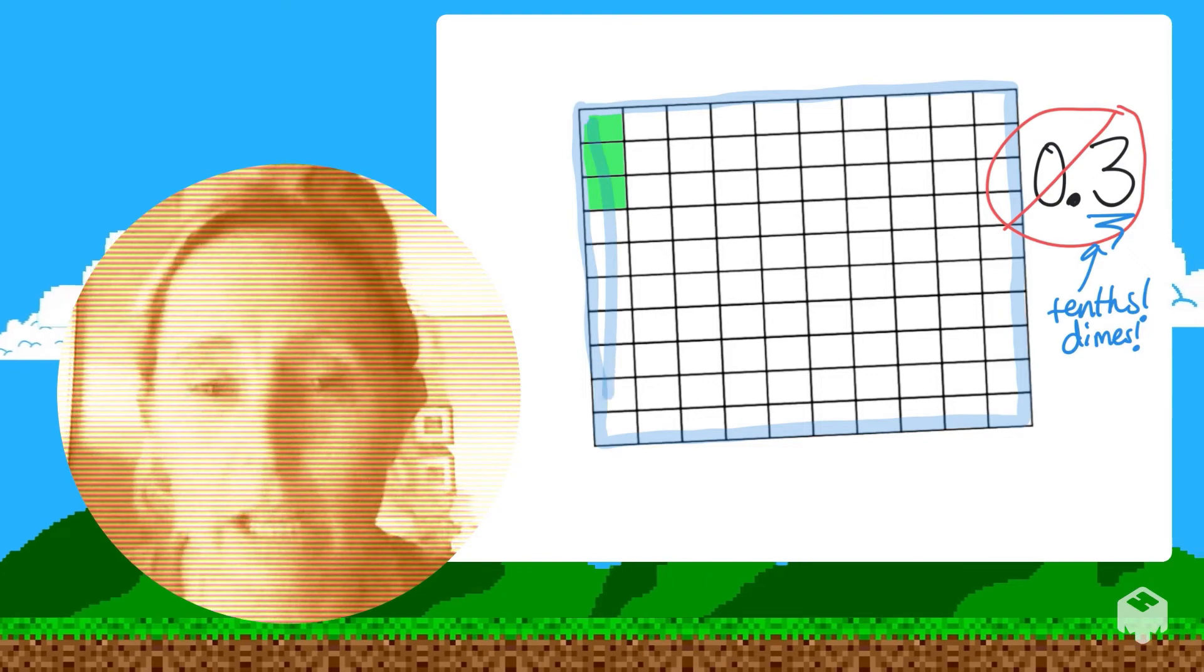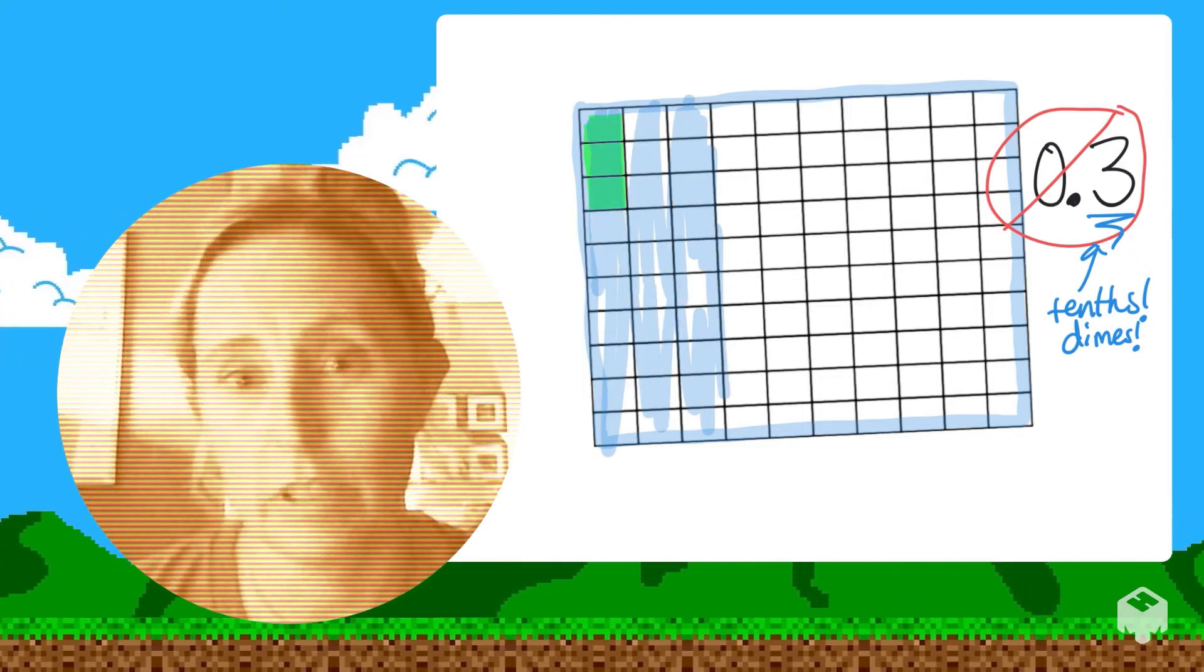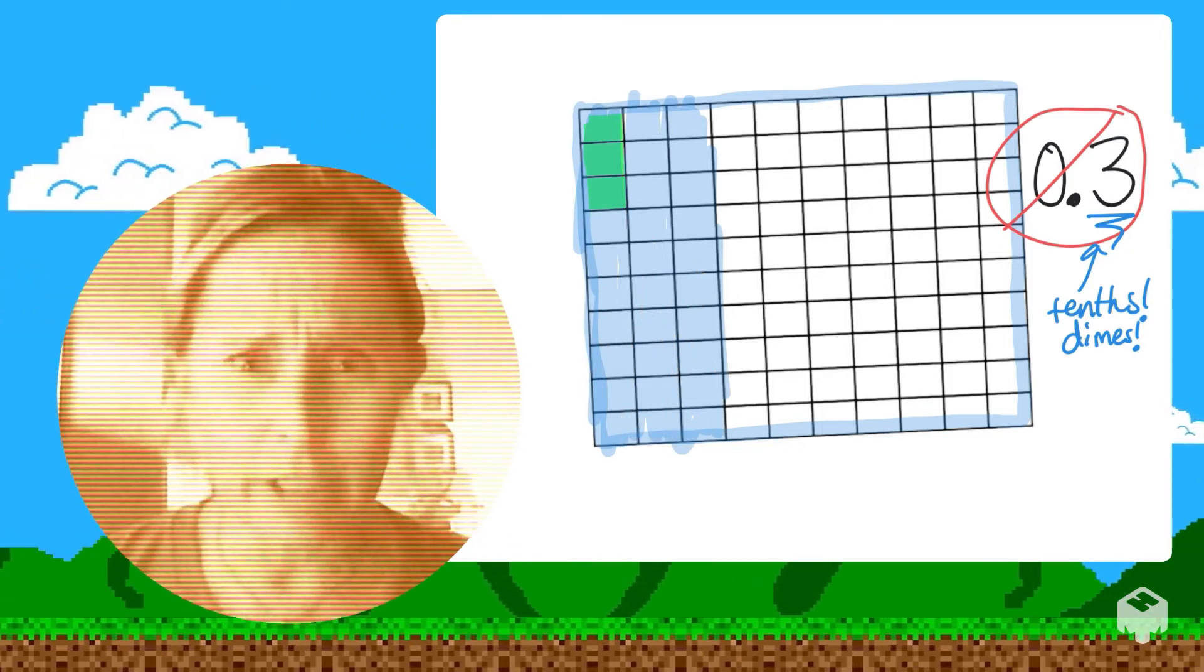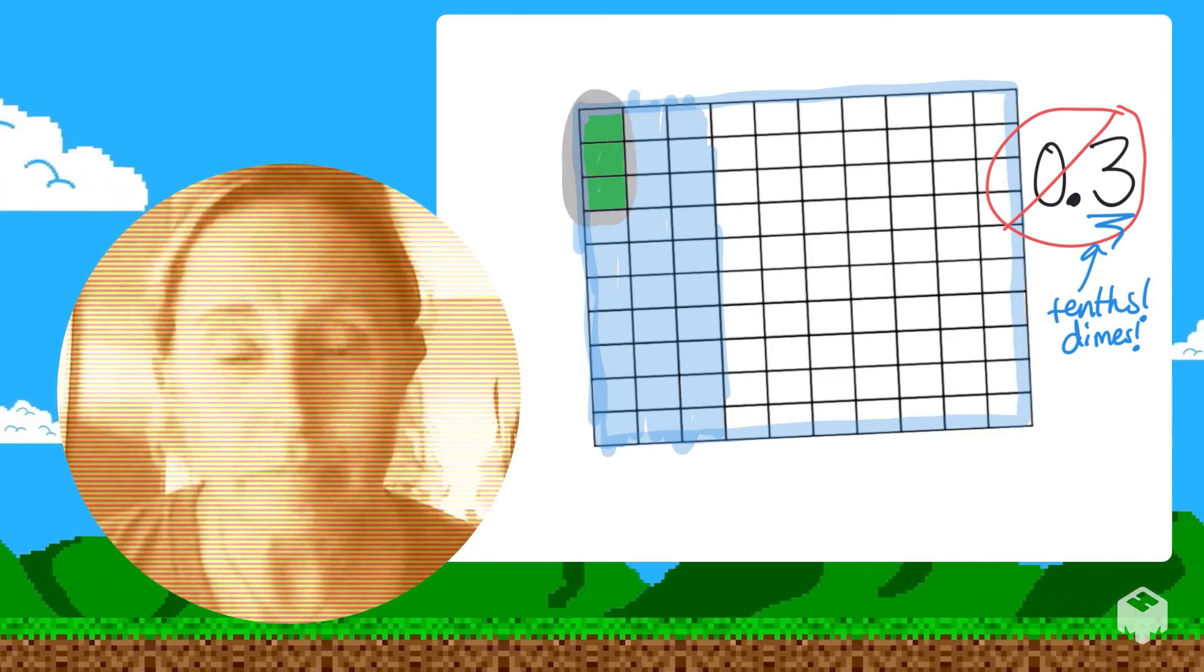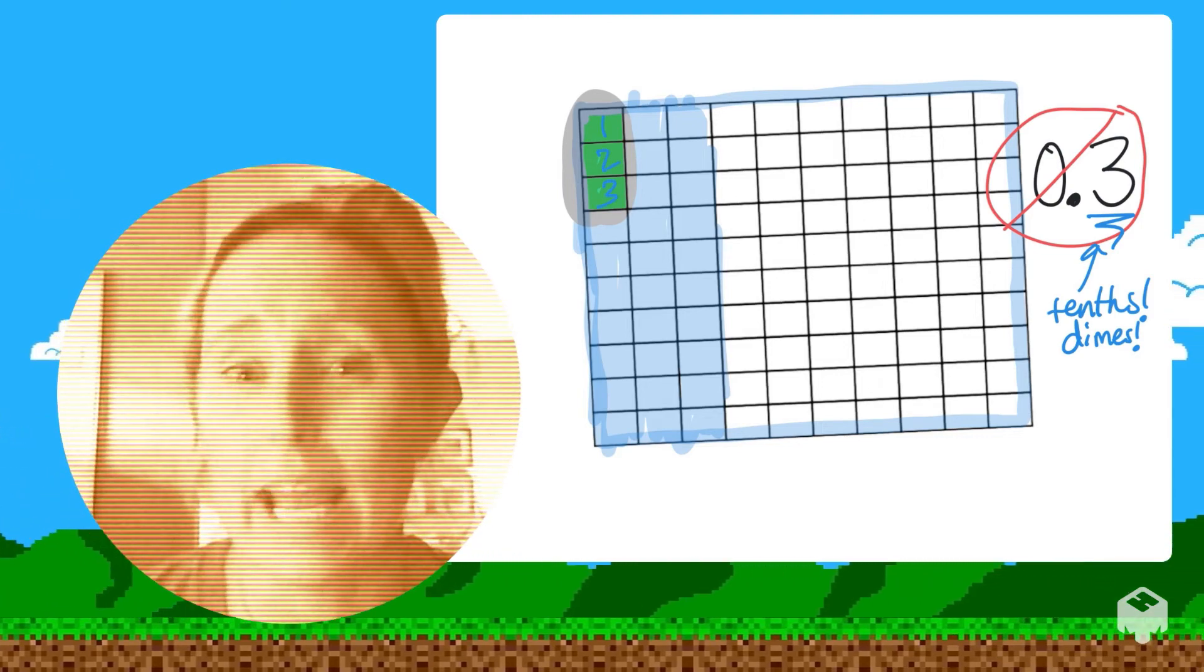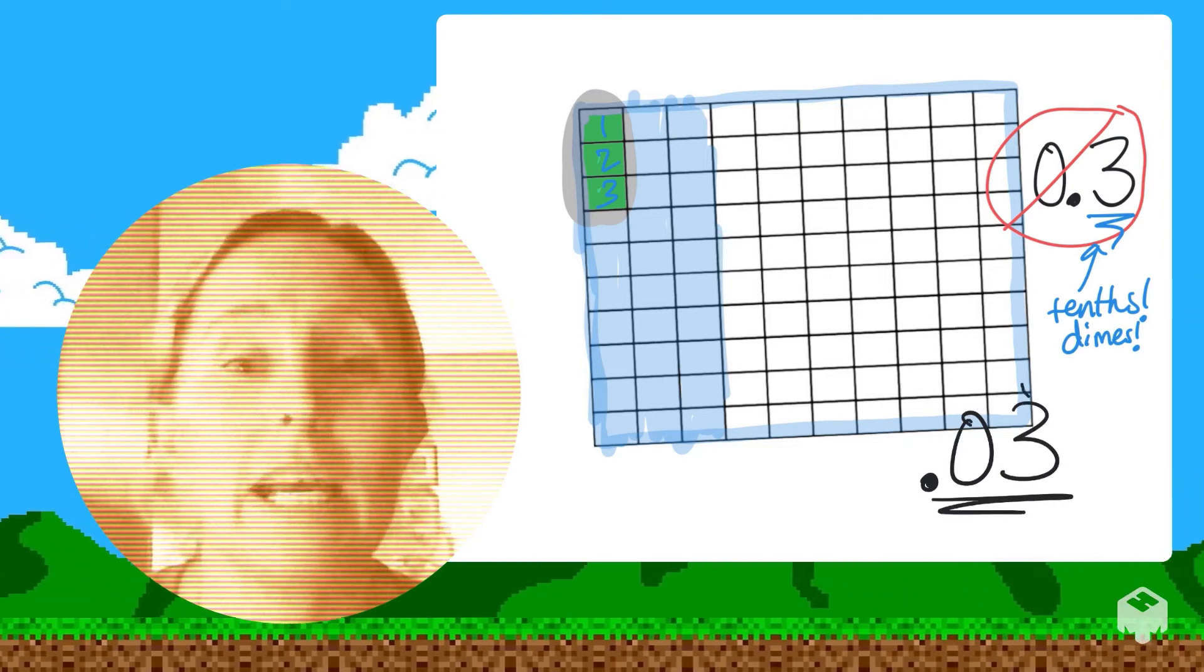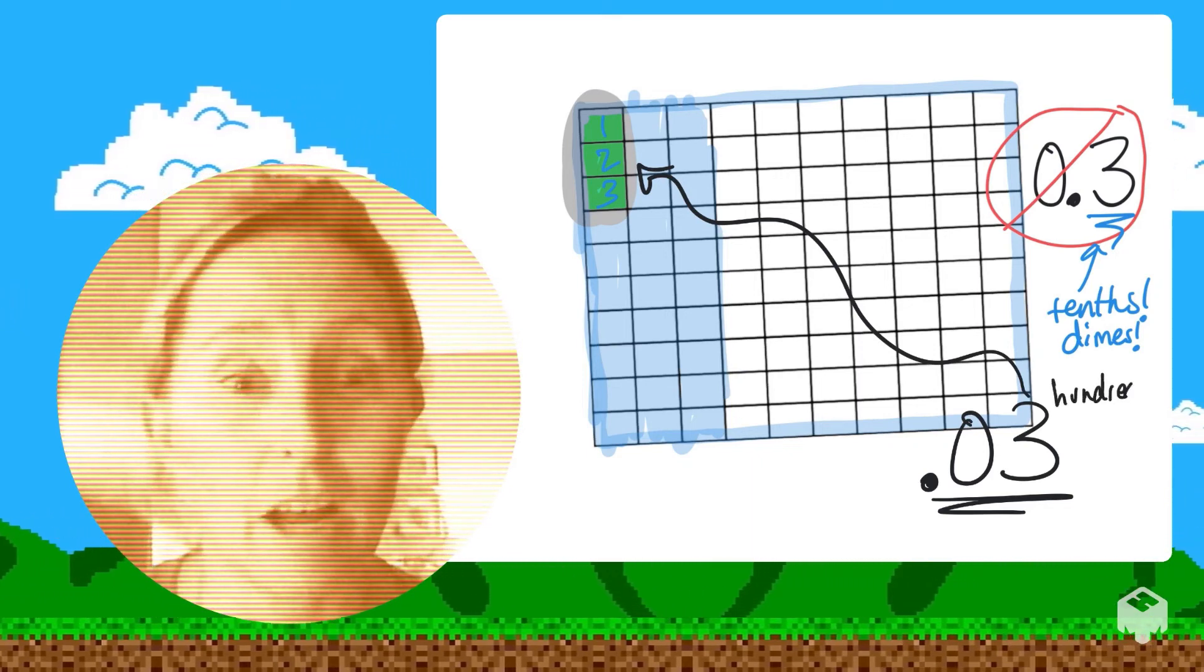So look how I'm shading three dimes and see if you can see the difference. Three dimes is 30 cents, not three cents. So what can I do to get the three in the hundredths place? I can add a very, very important place-holding zero and bump my three over to its place value. That is correct for this model: 0.03, three in the hundredths place.